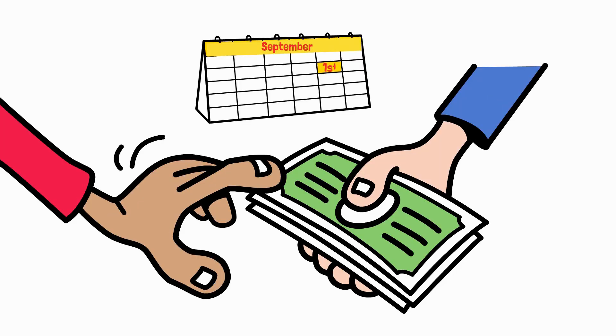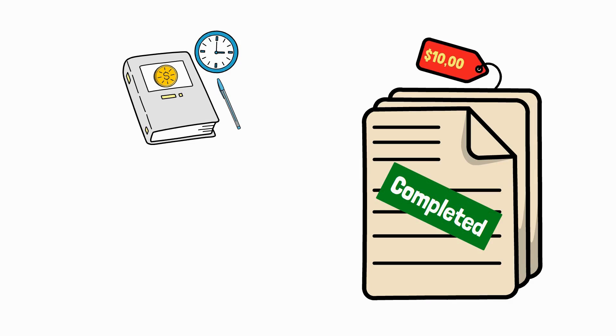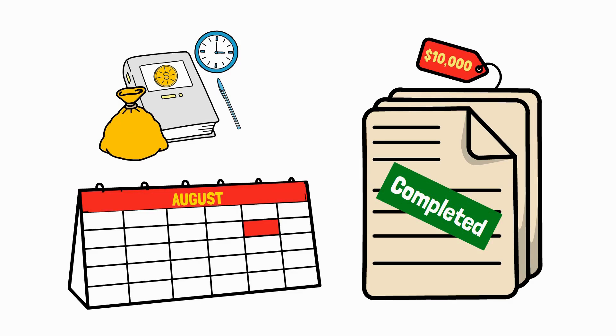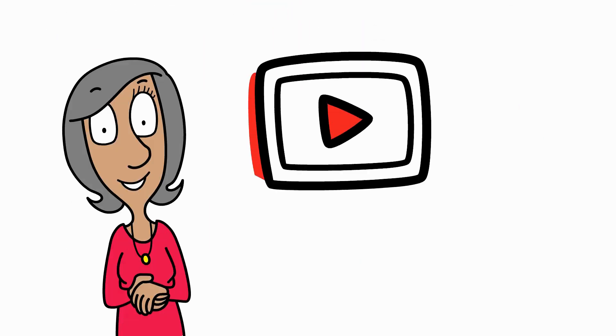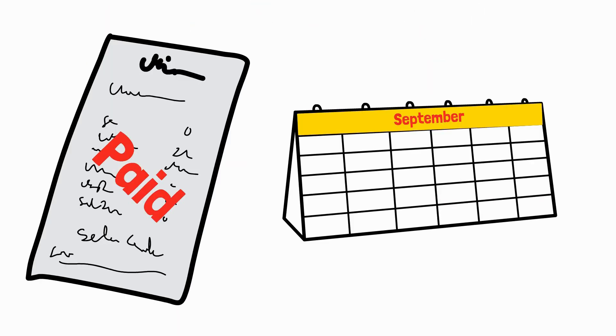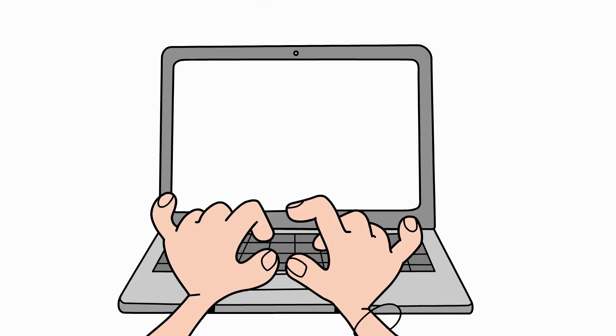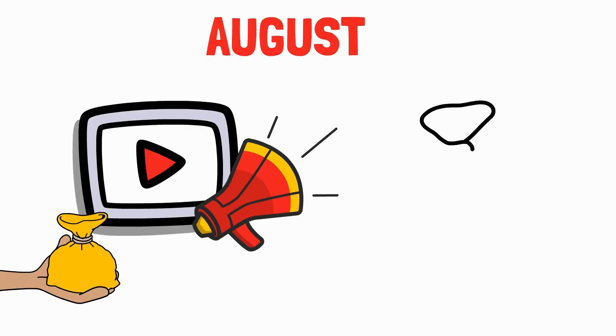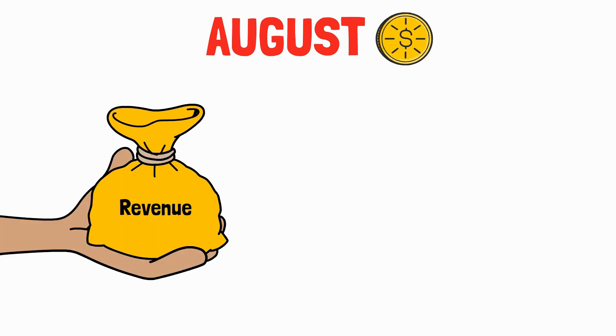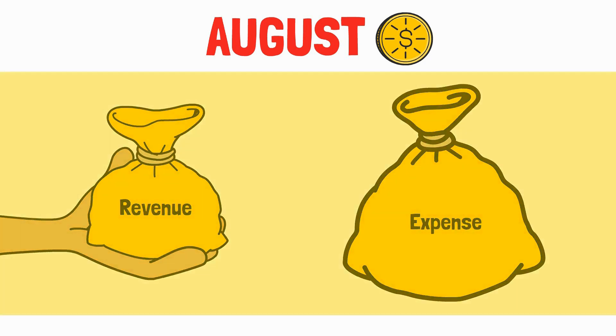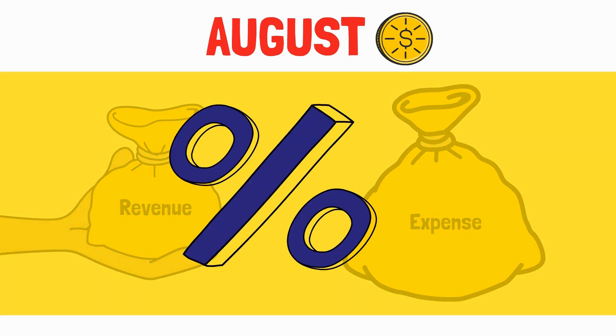You receive the payment on September 1st. Under accrual accounting, you record the $10,000 as revenue on August 1st, because that's when you earned it. If you bought $2,000 worth of ad space for that same project, but only paid the bill on September 10th, you'd still record that expense in August to match it to the income it helped generate. This way, your August financials reflect both the revenue and the expense of that project, giving you a true picture of profitability.